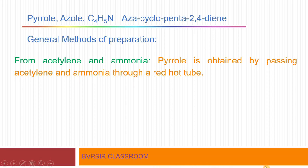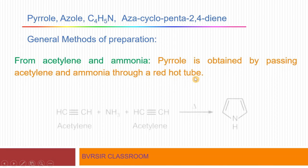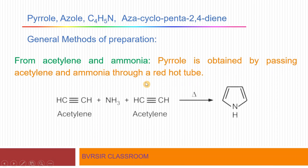The first method of preparation is from acetylene and ammonia — a very simple method. Pyrrole is obtained by passing acetylene gas and ammonia through a red hot tube. Two acetylene molecules react with ammonia to give C4H5N.